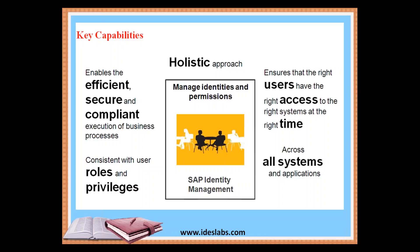Next is the key capabilities. The key here is a holistic approach to managing identities and permissions in SAP Identity Management. First, it enables efficient and compliant execution of business processes. Next, it ensures that the right user has the right access to the right system at the right time, and maintains consistency of user roles and privileges across all systems and applications.